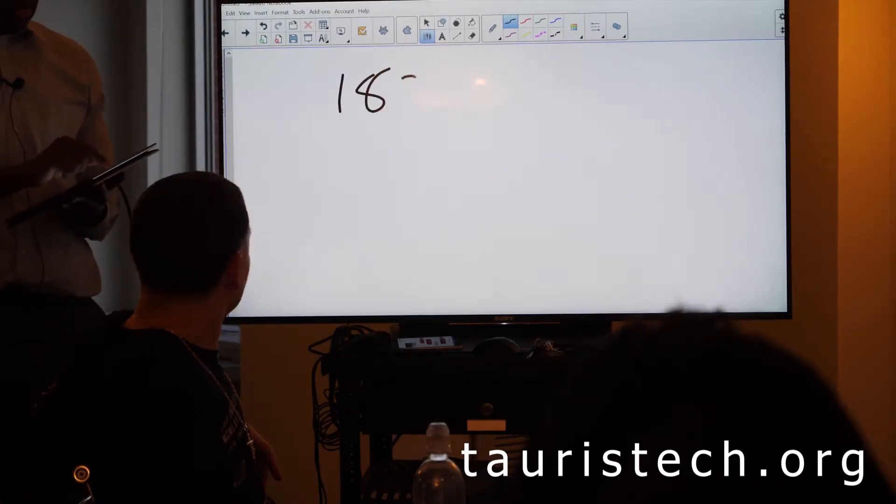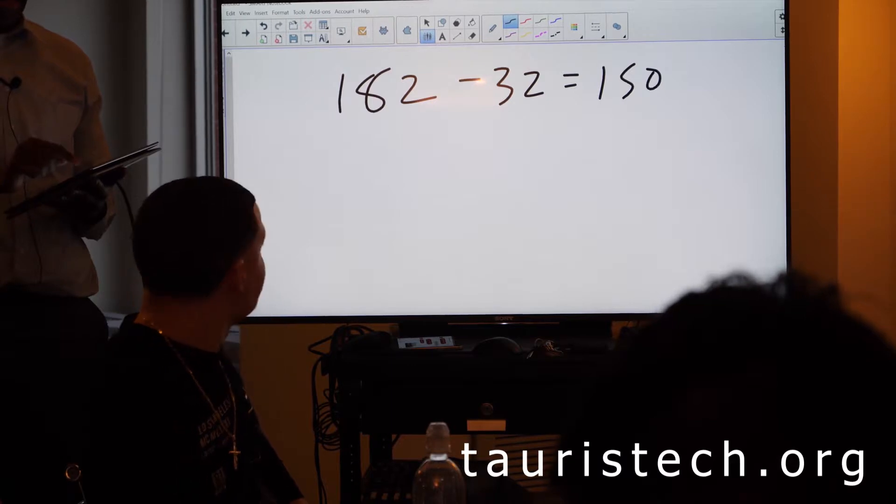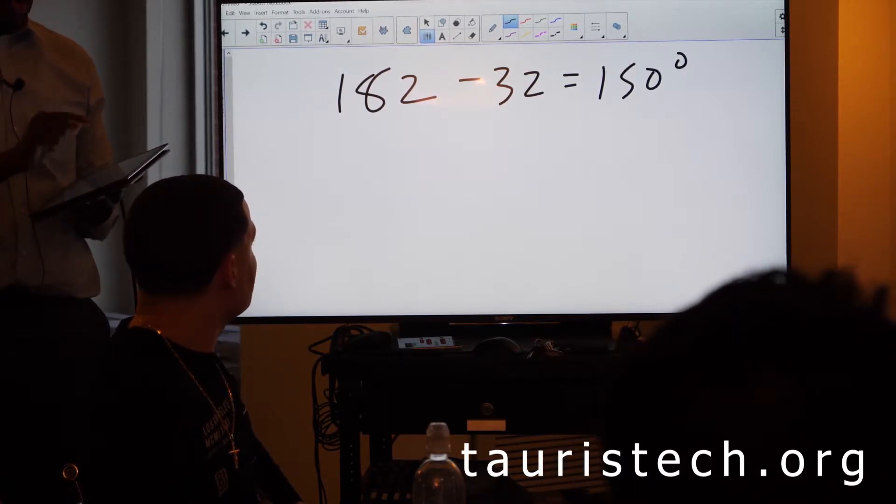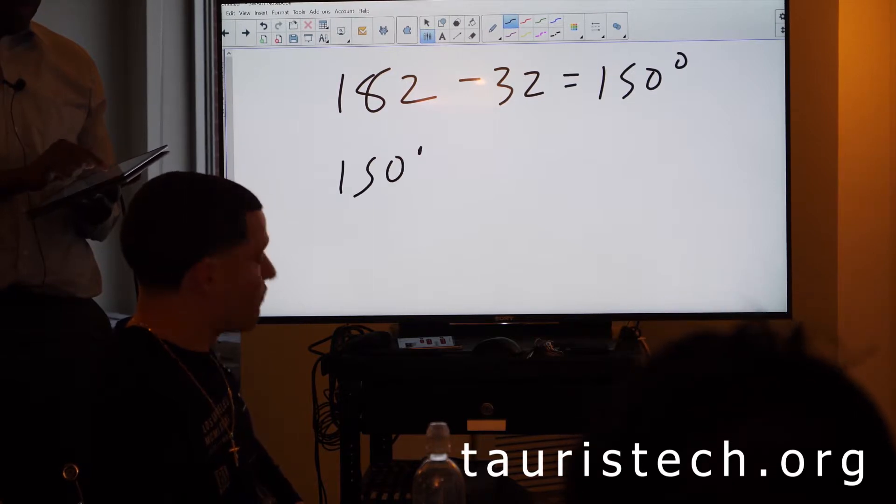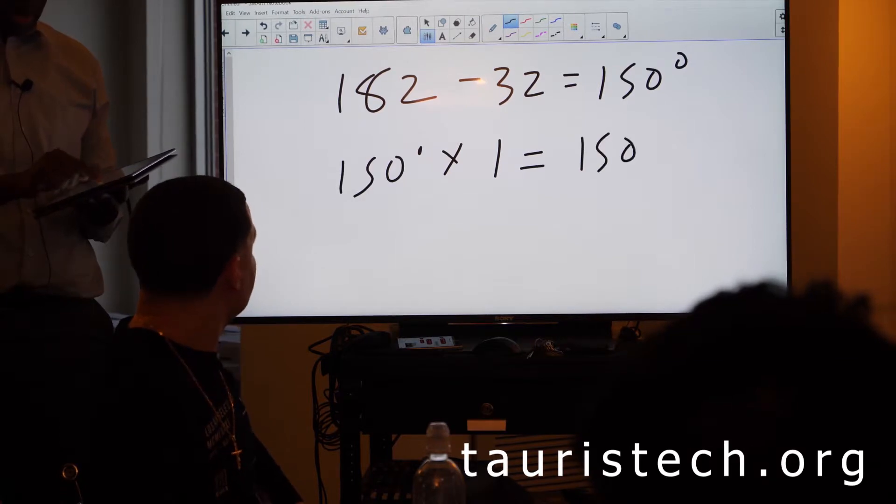So 182 to 32 equals 150 degrees. What do I do with that 150 degrees? Which is 1 times 150 equals 150 BTU.